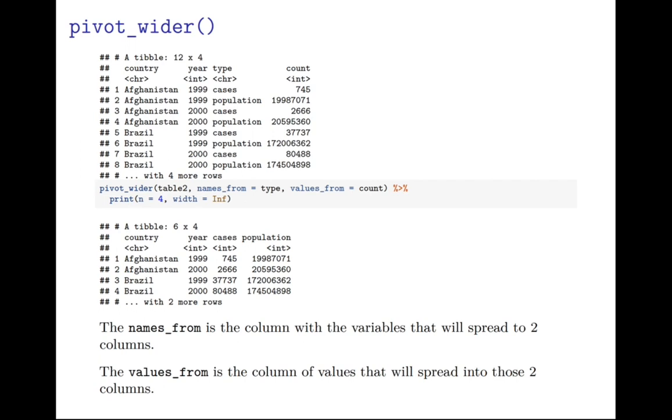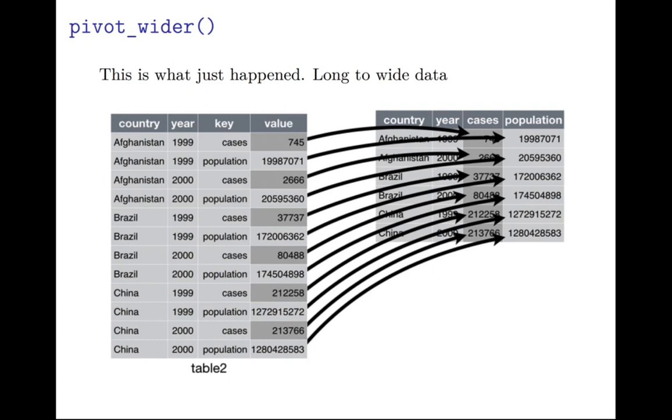Here the names_from is the column with a variable that will spread to two columns. And the values_from is the column of values that will spread into those two columns. So what you've done here is taken your long data and turned it into a wide format. Sometimes it's easier just to sort of visualize it with this.